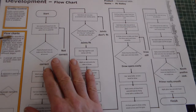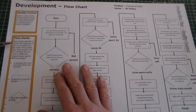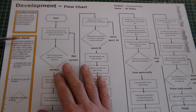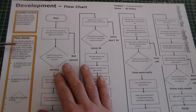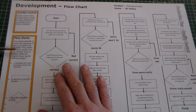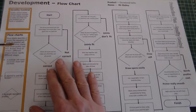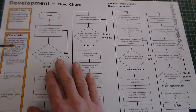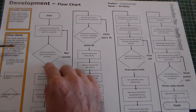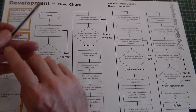We're going to use flow charts. Flow charts describe in words the sequence of how my product will be made. Flow charts will show control. Arrows show direction, and there are different box types to explain.